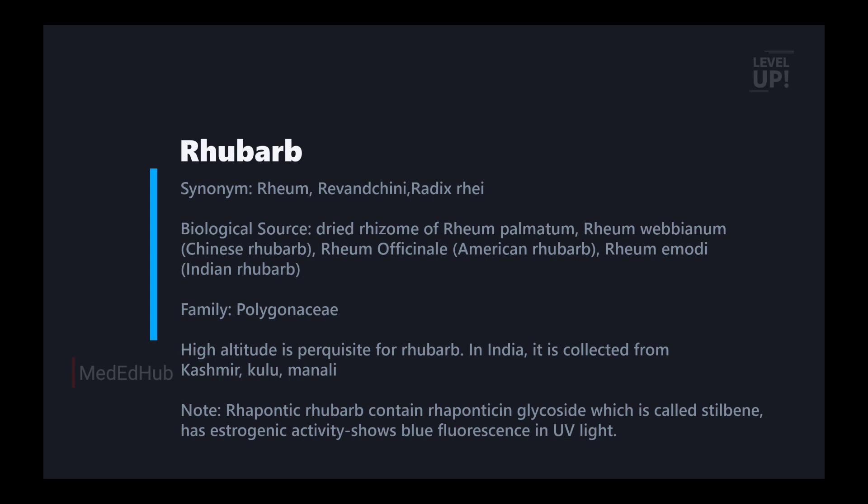Family Polygonaceae. High altitude is a prerequisite of rhubarb. In India, it is collected from Kashmir, Kulu and Manali. It is called Kulu Manali rhubarb.